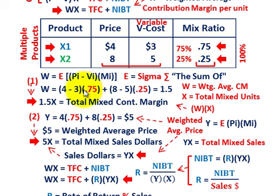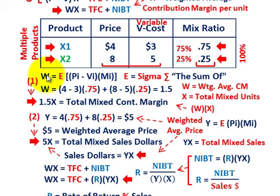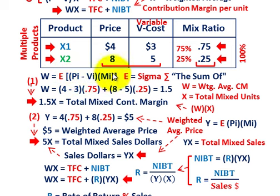We have two things to deal with: we have to determine our total mixed contribution margin and our total mixed sales dollars. For the total mixed contribution margin, W is the weighted average contribution margin on a per unit basis. The formula is the sum (sigma) of the difference between unit price and unit variable cost for each product times that product's mix ratio. So let's figure out the weighted average contribution margin for our two products.